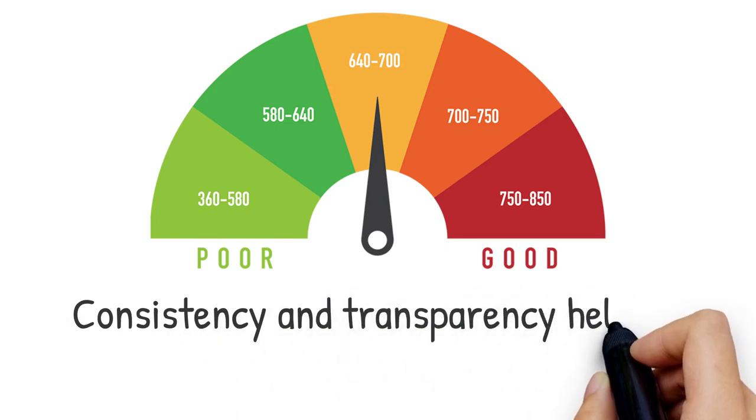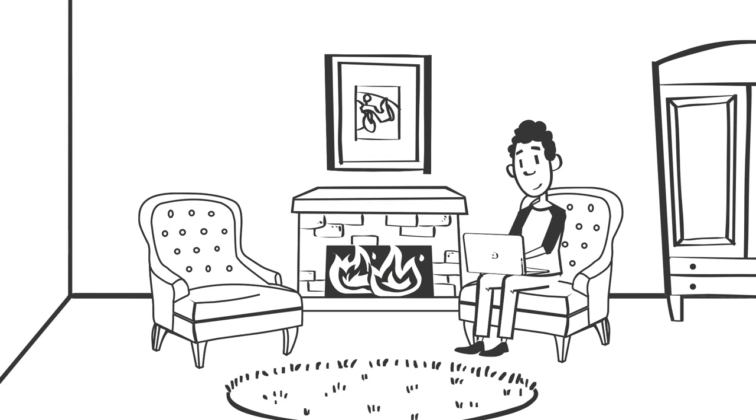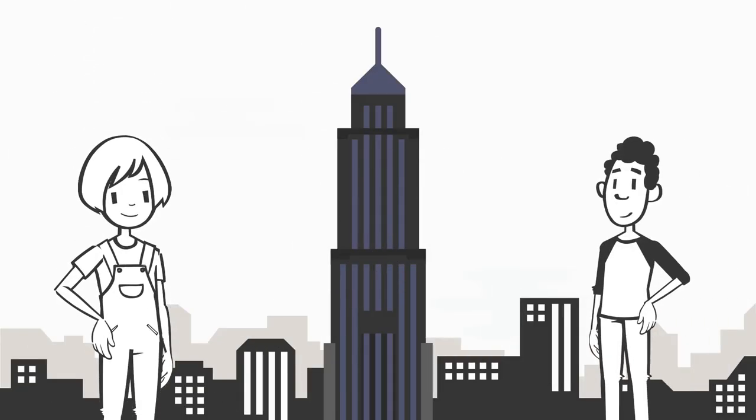Consistency and transparency help in building business credit. It also prevents confusion to anyone who may verify the company exists. The age of your company makes the public record your friend.